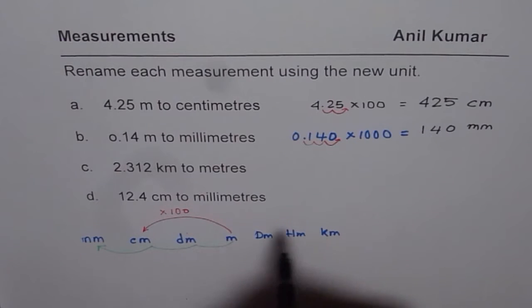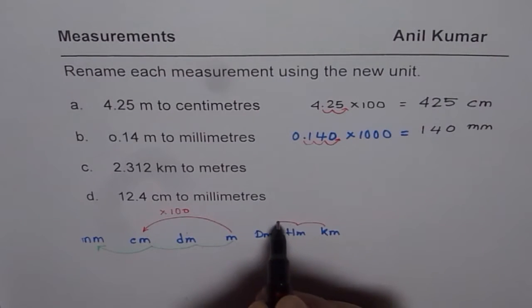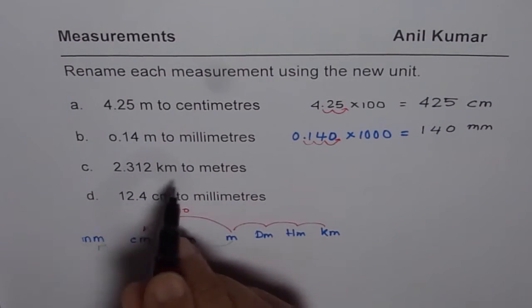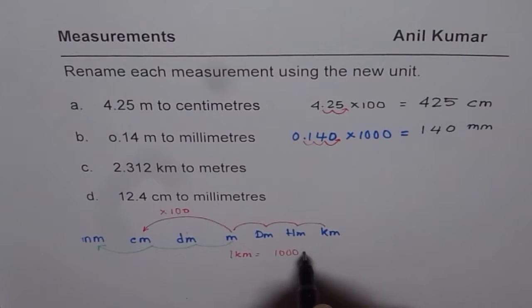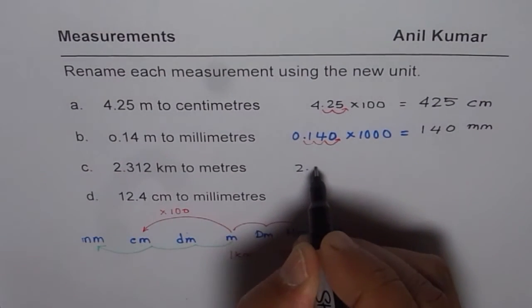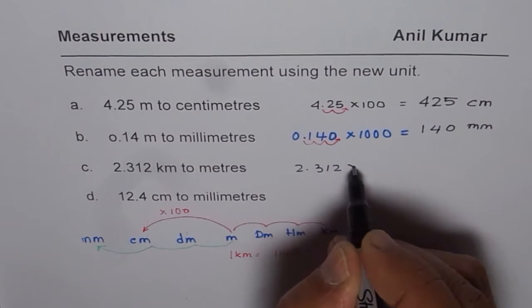Now, kilometers is much higher. So we have 10, 100, 1000. It gets multiplied by 1000. 1 kilometer is equals to 1000 meters. So we will multiply 2.312 by 1000.